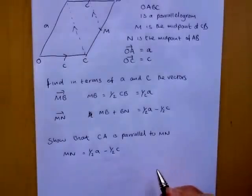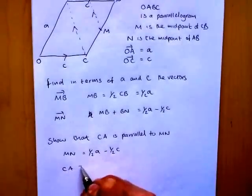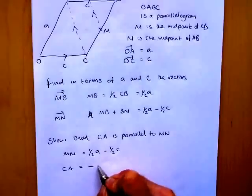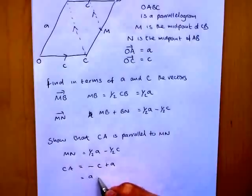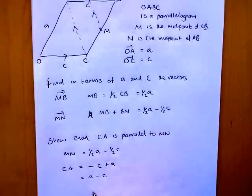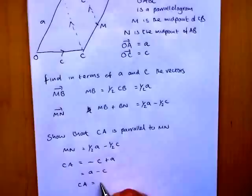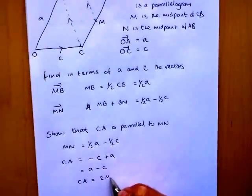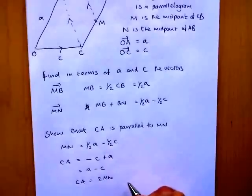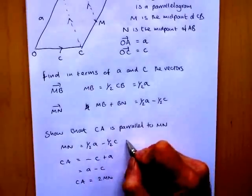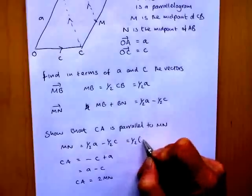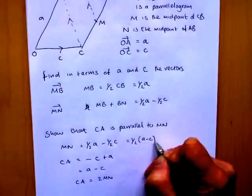So if we look at CA, CA equals minus c plus a, or if you like a minus c. So we can see then that CA is two lots of MN. And they are going in the same direction. So if I take the half out here, it's clearer. MN equals a half of a minus c.